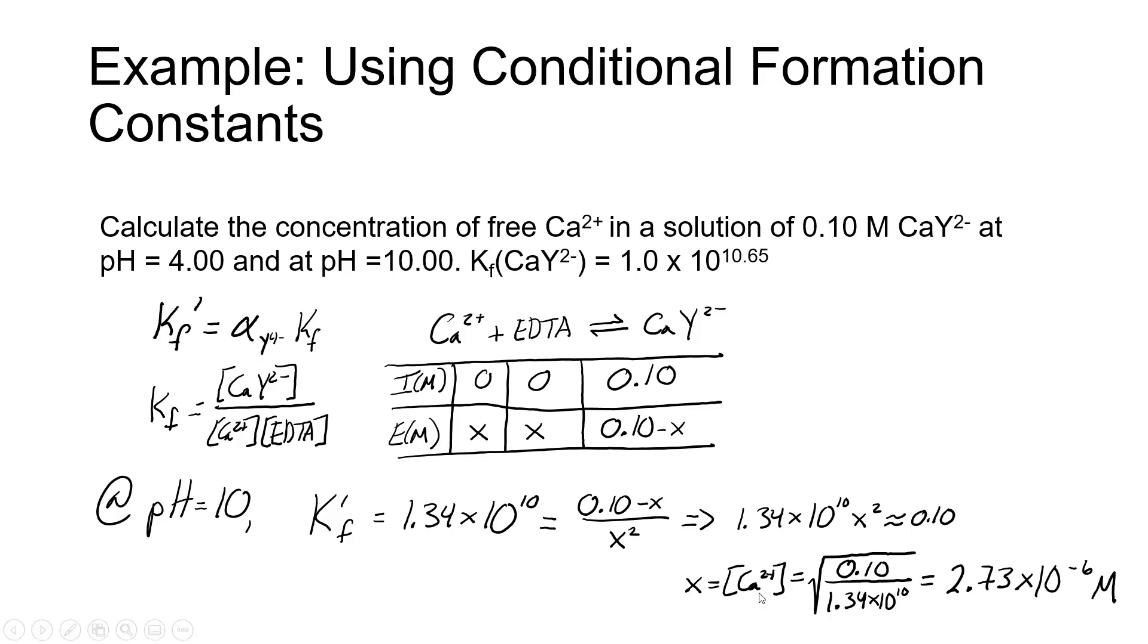Doing the math, we get X, which is equal to calcium 2 plus concentration, which is equal to the square root of 0.10 divided by the conditional formation constant, which at pH 10 is 1.34 times 10 to the 10th. And we find that at pH 10, our concentration of uncomplexed calcium at equilibrium is 2.73 times 10 to the minus 6th molar.